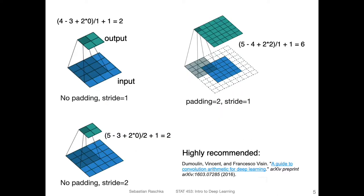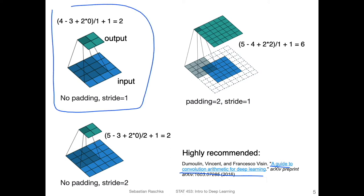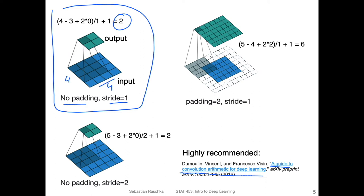Let's look at some examples from a nice article called 'A Guide to Convolution Arithmetic for Deep Learning.' In the upper left, there's a four-by-four input with a stride of one and no padding, resulting in a two-by-two output. There's an animation showing how the kernel slides over the input, moving by one pixel position each time. You can see we lose one pixel on each side because we don't go over the edges, so the output is shorter by two rows and two columns than the input.